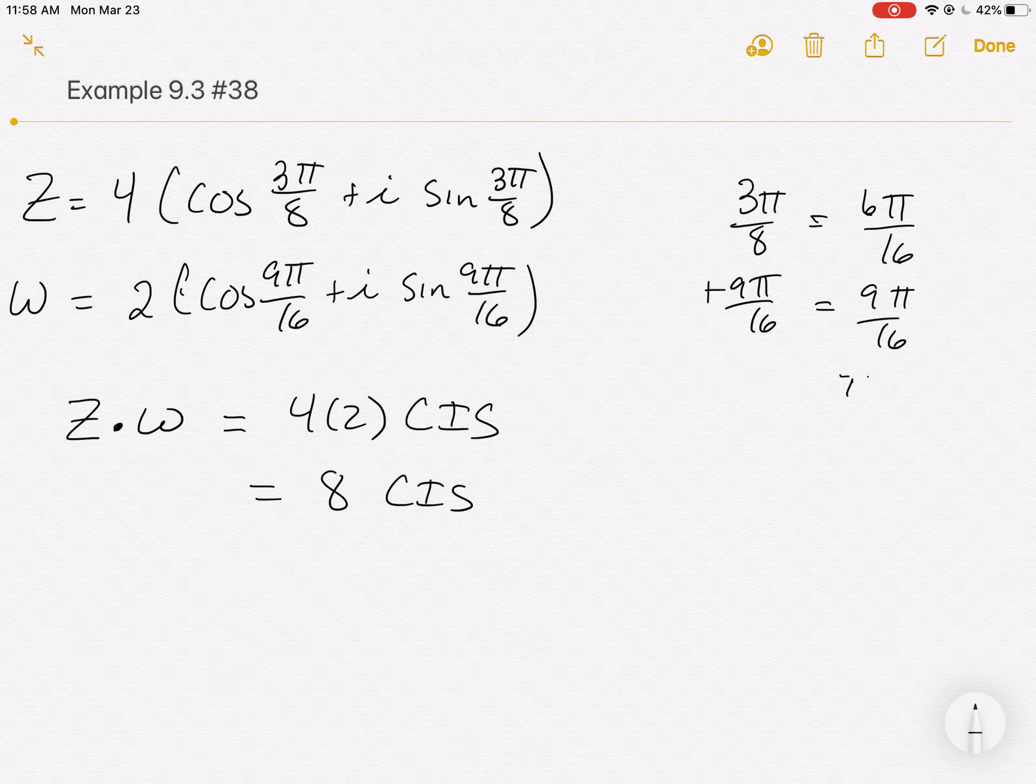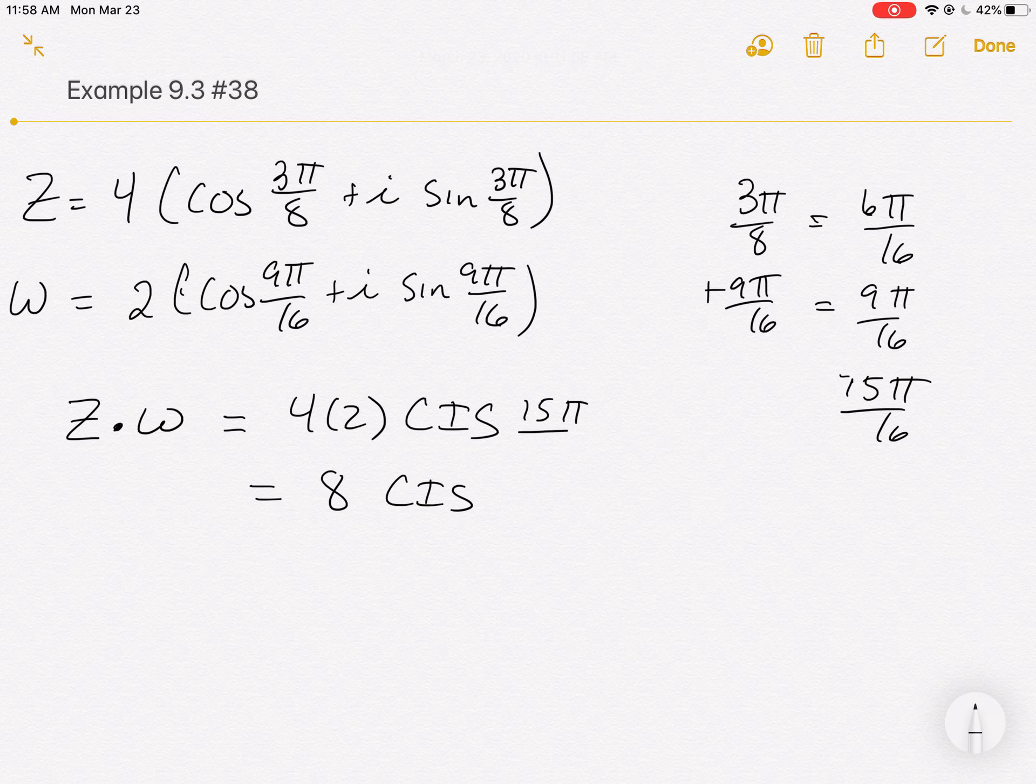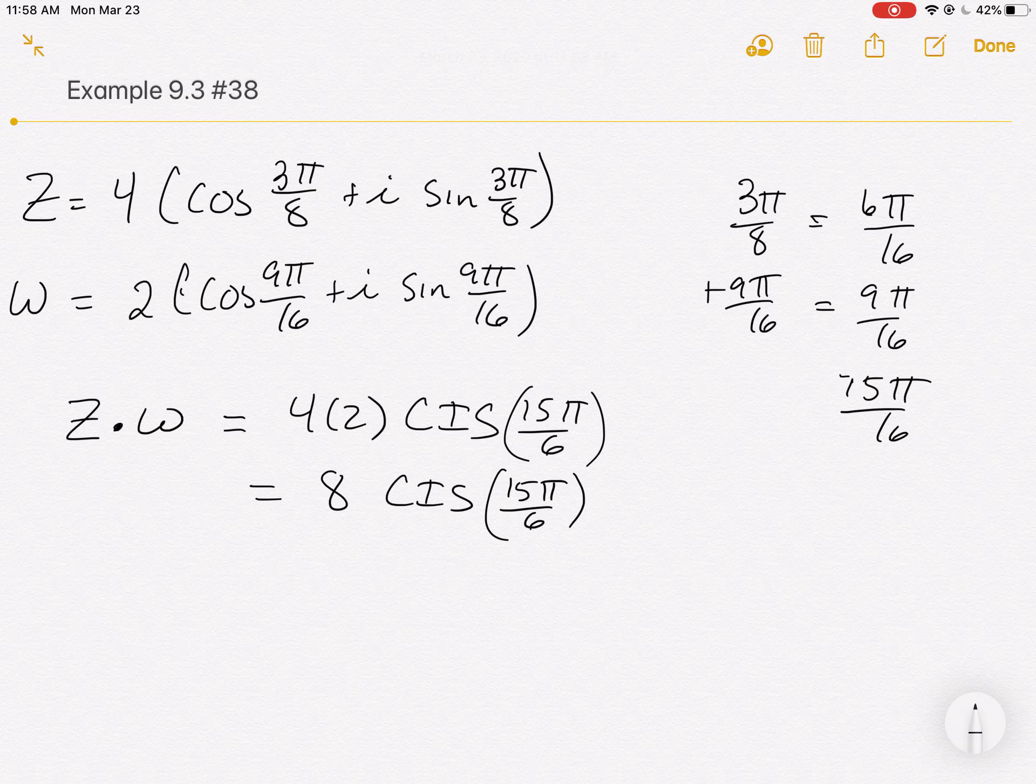And that easily, we can multiply two complex numbers together, not going through a big foil process or anything. The answer for the first part of 9.3 number 38 is 8 CIS 15π over 6.